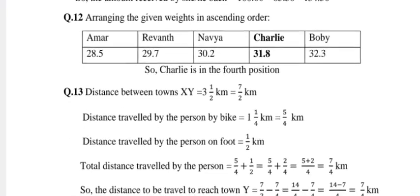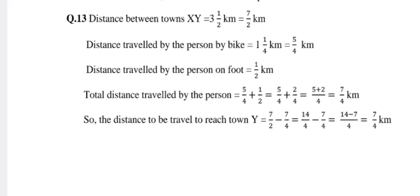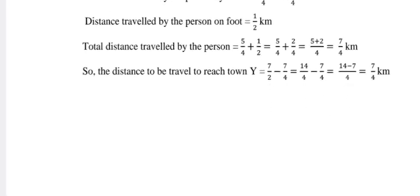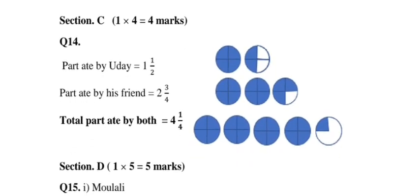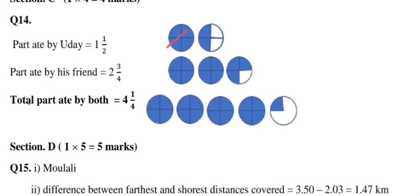Arranging the given weights in ascending order, Charlie is in the fourth position. For the distance problem, the distance between X and Y is given, along with the distances covered by bike and on foot — the explanation and working are shown. For Section C (pizza problem): Udai ate 1 and 1/2 pizzas — that's one complete pizza and a half. His friend ate 2 and 3/4 pizzas — two complete and three-quarter parts. When combined, the parts fill up to make complete pizzas, with one remaining part shown in the figure.